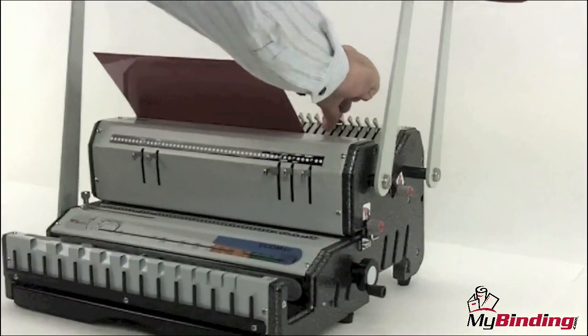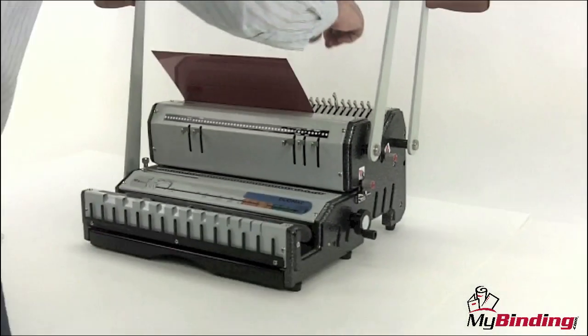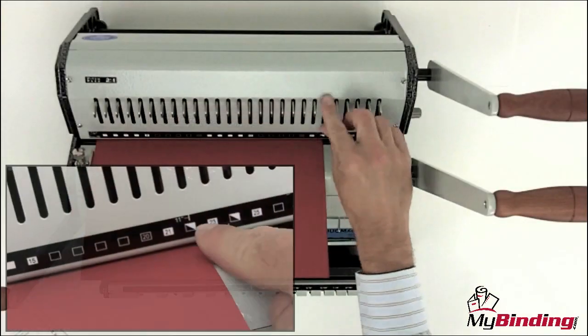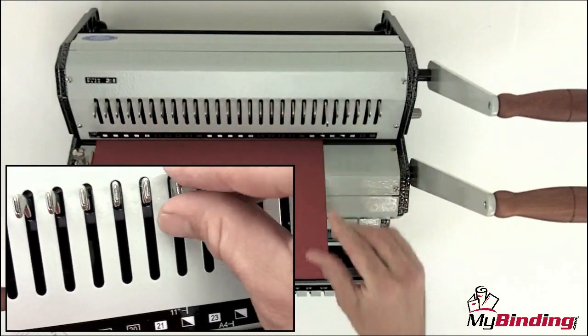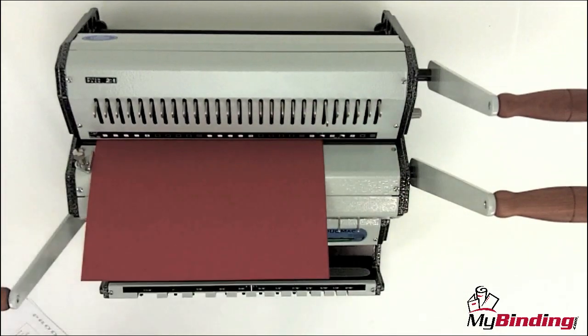Some machines have adjustable dies which allow you to remove a certain pin or a punch so that you can use different size papers and have total control over what gets punched and where, making sure there's no half punches.